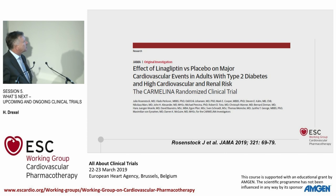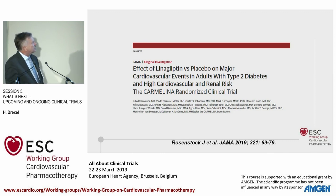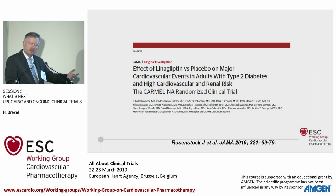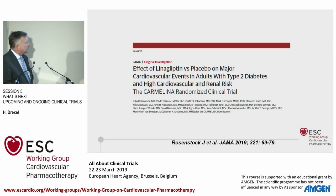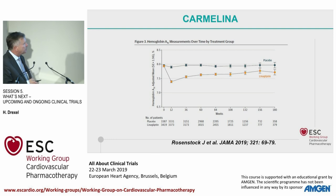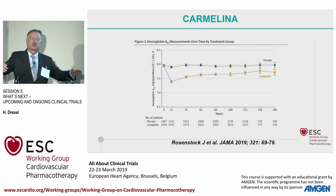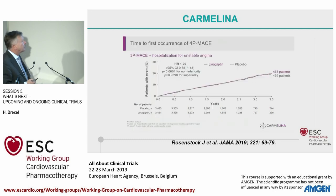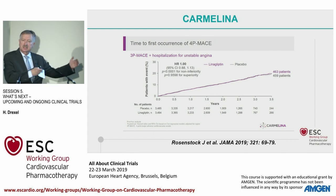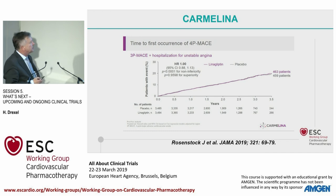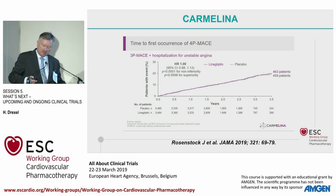Looking at the latest data from CARMELINA — another DPP-4 inhibitor trial with Linagliptin, which is mostly excreted via the liver rather than the kidney, allowing use in patients with advanced kidney failure. HbA1c was reduced, confirming improvement of microvascular complications over time. But what about macroangiopathy? Nothing changed there — it is not toxic, the equivalence criterion is met, safety is confirmed, but there is no improvement in cardiovascular disease outcome.